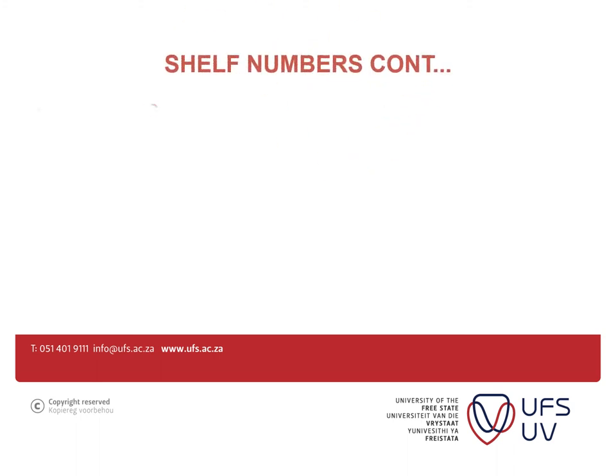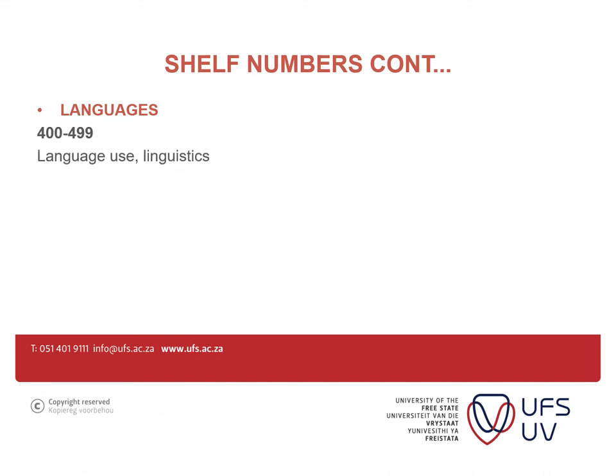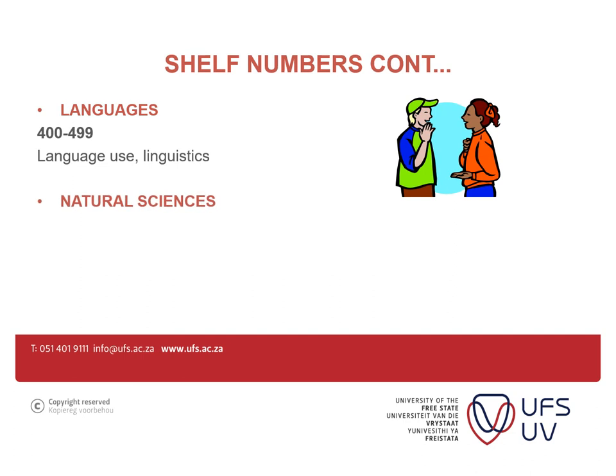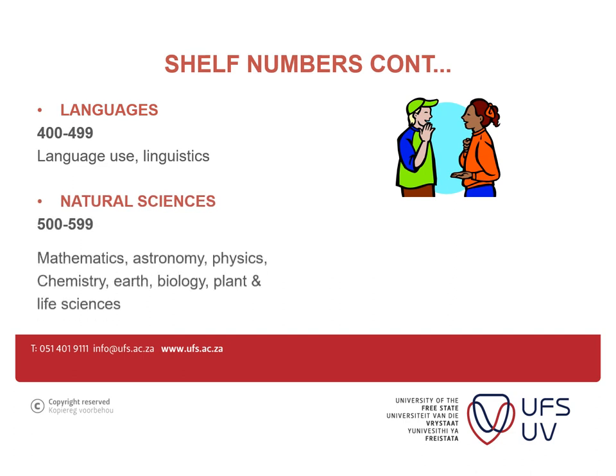Continuing with shelf numbers: 400 to 499 is languages, covering language usage and linguistics. Languages are found from 400 to 409, and linguistics from 410 to 419. If you are doing Afrikaans, you'll find your books at 439. African languages, including South African languages, are found at 496.